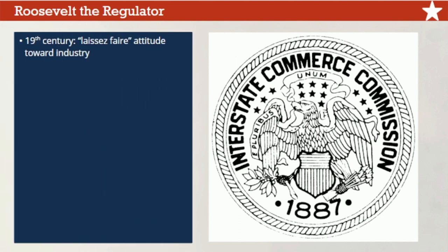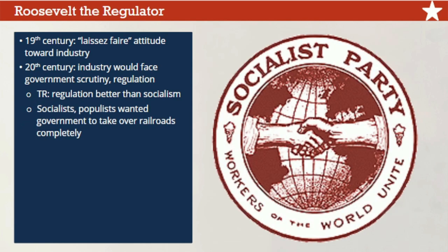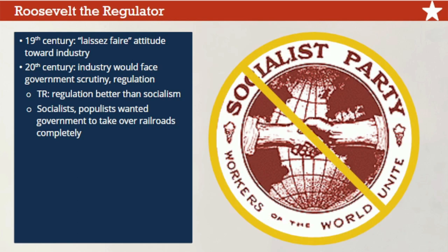The Hepburn Act was a turning point in federal control over a private industry. In the 19th century, the U.S. government had practiced a laissez-faire attitude, allowing industries to do as they pleased without federal interference. Now, under progressive presidents like Roosevelt, industry in the 20th century would find itself increasingly subject to government scrutiny and regulation. Roosevelt viewed regulation as a halfway step better than the alternative — socialism. Some socialists and populists wanted the government to completely take over and run the railroads, but Roosevelt simply wanted a somewhat fairer version of the existing system: a square deal.